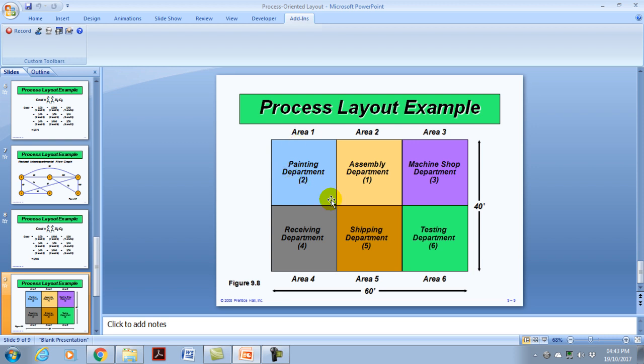So painting would now be area one. Assembly would now be area two. Machine shop would now be area three, and so on and so forth. So you can actually see that we can calculate the movement between one department to the next in order to determine whatever layout indeed is, you know, desirable by the organization or not. That's the end guys, take care.